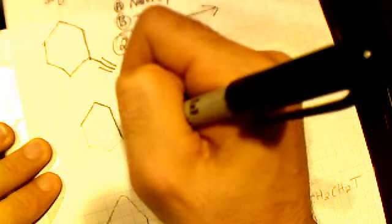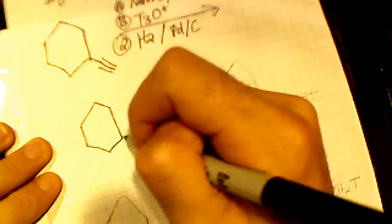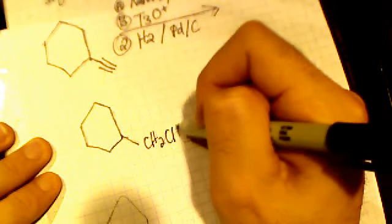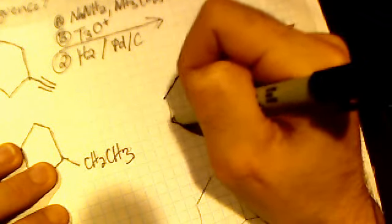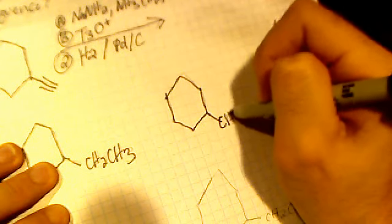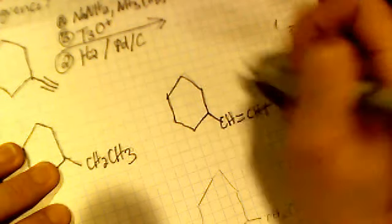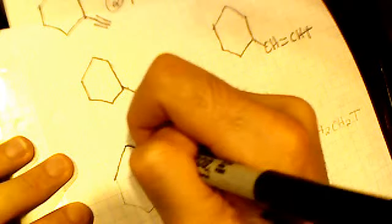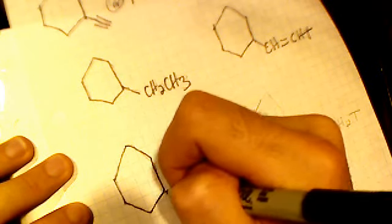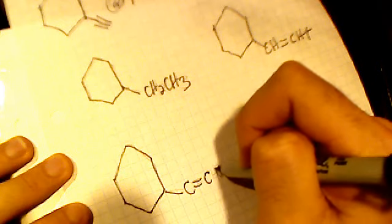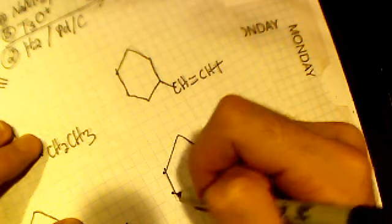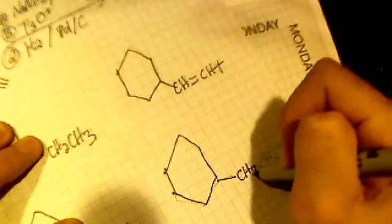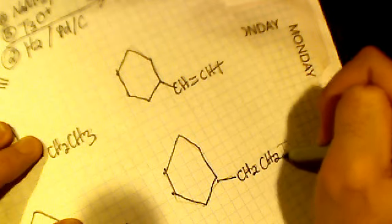So then is it going to be CH2, CH3? Is it going to be the hexane molecule attached to CH single bond, CHT? Is it going to be the hexane bonded to CH2, CH2, CH2, T?